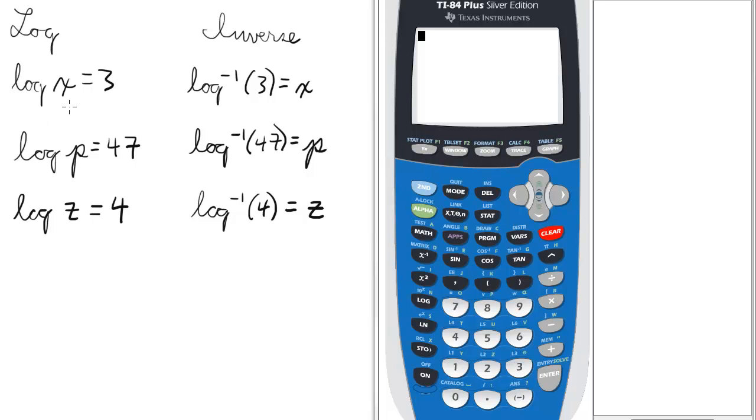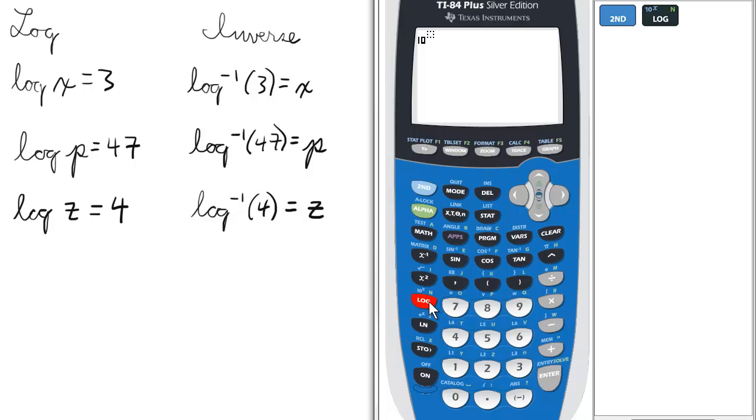If we have the problem log x equals 3, the inverse form would be inverse log of 3 equals x. On the calculator, we press these buttons: second, then log, which gives us the inverse log.